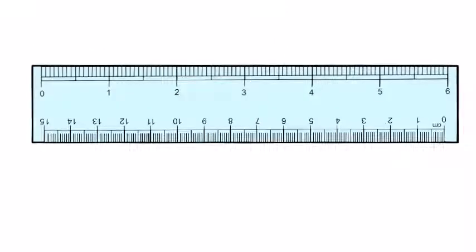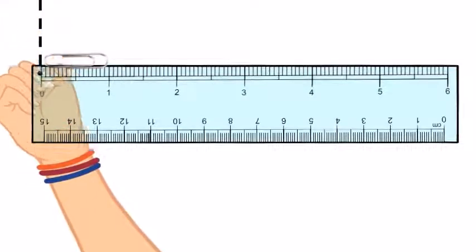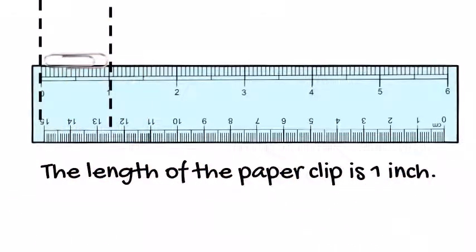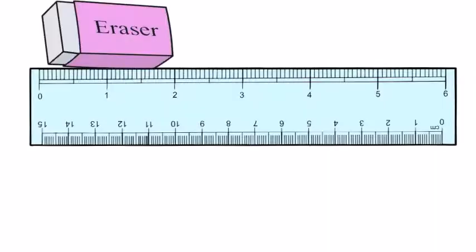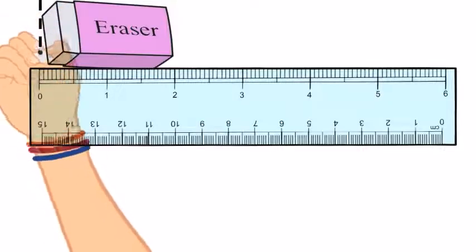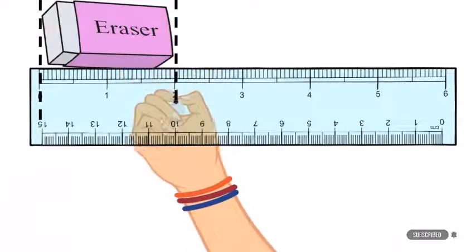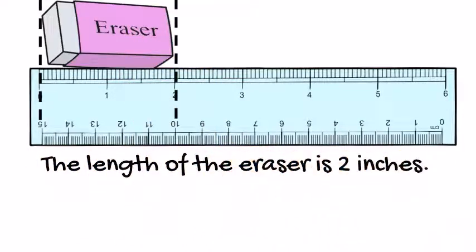Now for the next object, which is the paper clip. Again, we're still measuring in inches. And I see that this paper clip, the length of the paper clip is one inch long. You got this? You're doing a great job. Let's try measuring the eraser now in inches. So the length of this eraser looks like two inches long. You've got this.